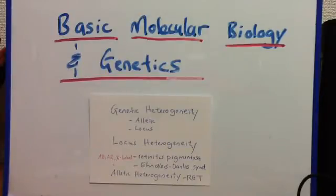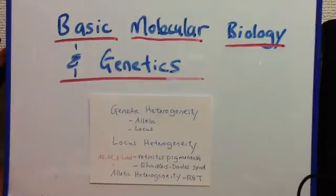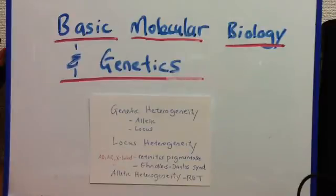Allelic heterogeneity is when different mutations occur at the same locus — the same area, the same part of the chromosome. For locus heterogeneity, though they sound very similar, the mutations are actually at different loci.